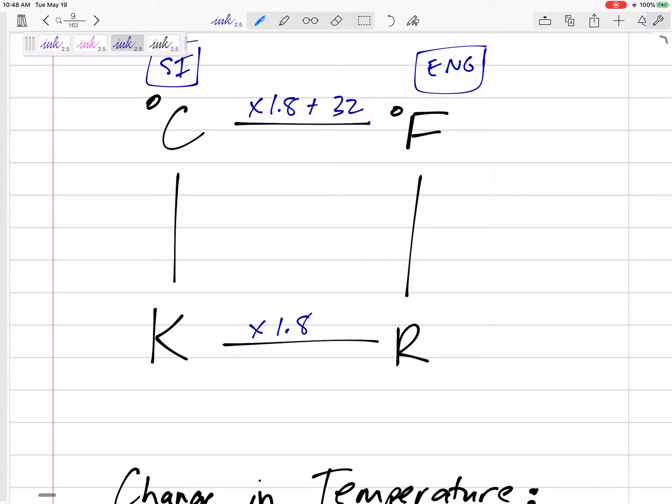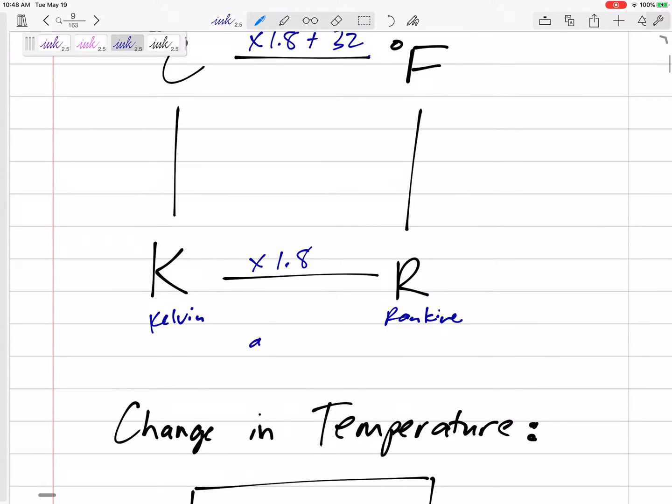Kelvin and Rankin are absolute temperatures - absolute temperatures they start at zero.